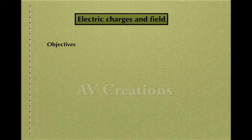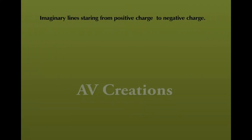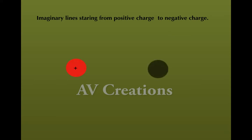We are going to discuss electric field lines. Electric field lines are imaginary lines starting from positive charge to negative charge. This is a positive charge and this is a negative charge. The imaginary lines starting from positive and ending at negative are known as electric field lines.